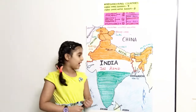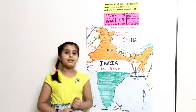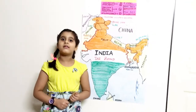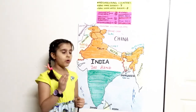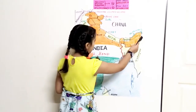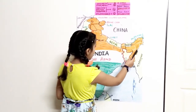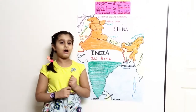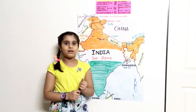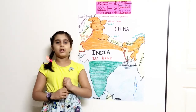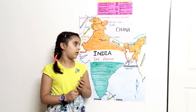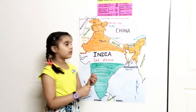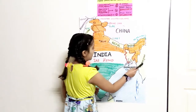The last neighboring country sharing an international border with India is Myanmar. The old name of Myanmar was Burma and the capital of Myanmar is Naypyidaw. It shares borders with 4 states which are Arunachal Pradesh, Nagaland, Manipur and Mizoram. Arunachal Pradesh shares the largest border with Myanmar.